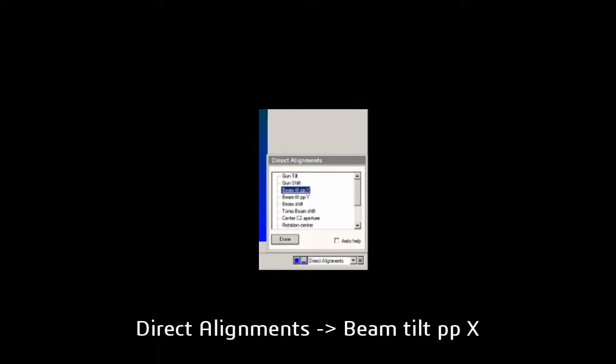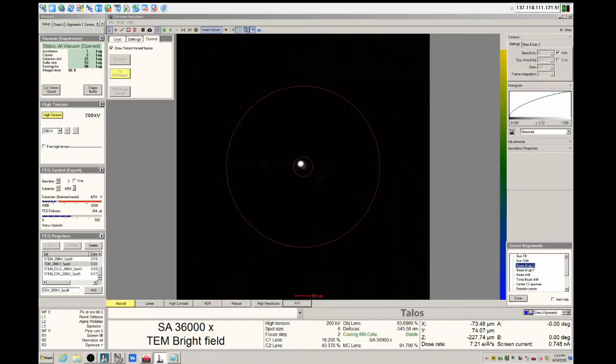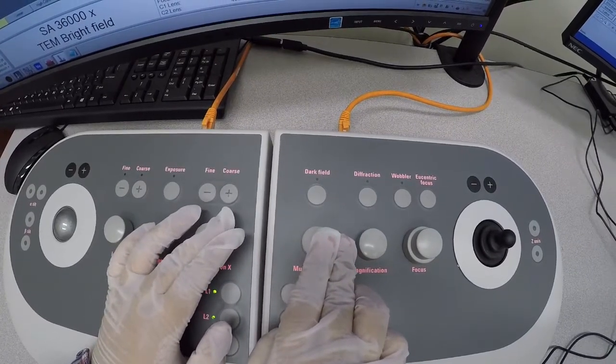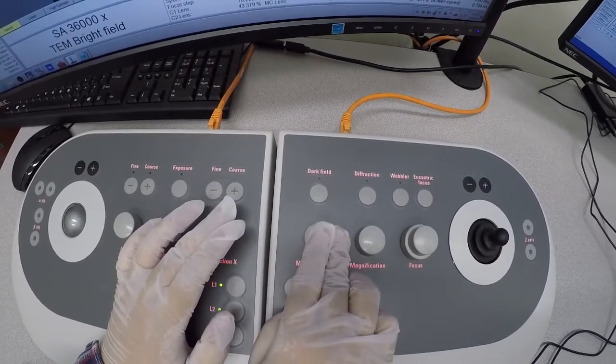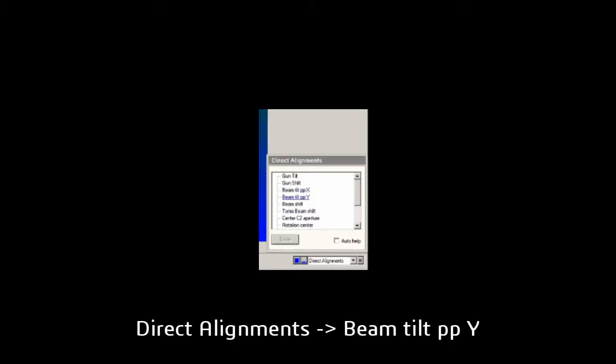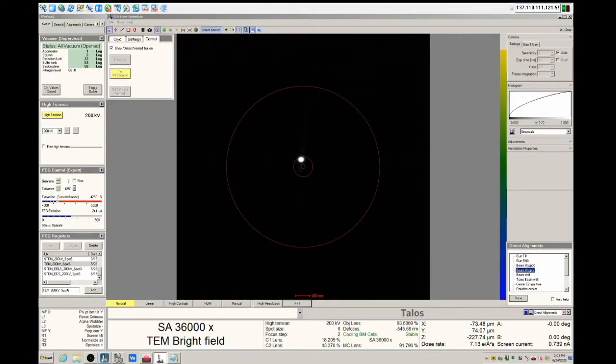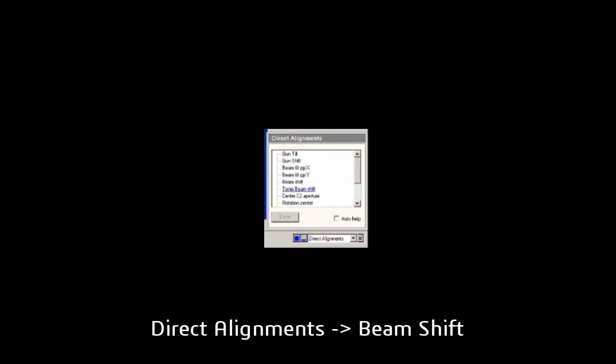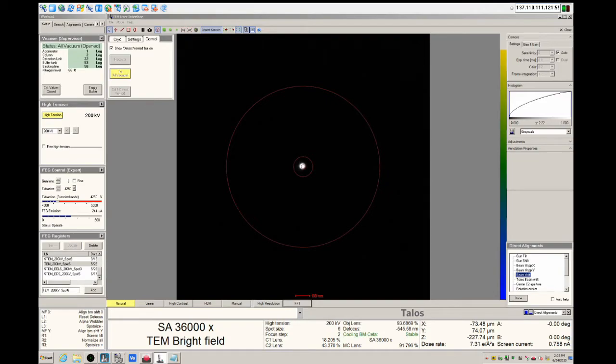Whenever you turn this on, the spot will look like it wobbles on the screen. You then use the multifunction X and multifunction Y dials to minimize the wobble. We then repeat this procedure for beam tilt PPY. It's good practice to continually touch up alignments as you proceed. So again, we're going to go back and adjust the beam shift direct alignment.